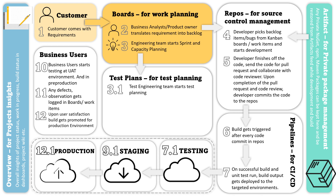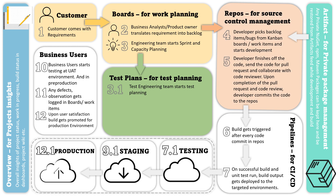Once requirements are converted into the backlog, it's time for the engineering team to do the planning of the sprint and capacity. After that it will go to the test engineers, who do the test planning. Once both the engineering team and test engineering team have completed their sprint, capacity, and test planning, it is time for developers to pick backlog items.